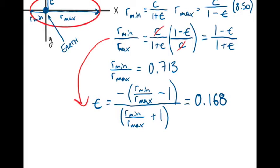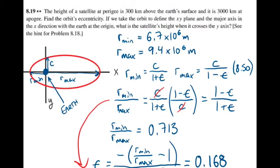The second half of the question asks us to find the satellite's height when it crosses the y-axis. So conveniently, the constant c that we canceled out earlier in equation 8.50 is actually the same length as the part of the orbit that we're asked to find.